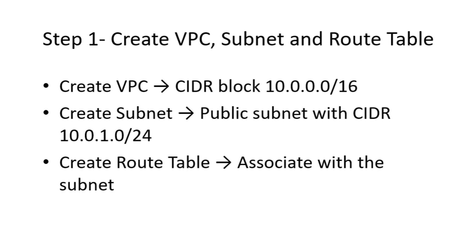Our first step is to create the foundation of the network. We begin by creating a new VPC with the CIDR block 10.0.0.0/16, which gives us a large private address space to work with. Next, inside this VPC, we'll create a public subnet using the CIDR 10.0.1.0/24, which will host our EC2 instance. Finally, we'll create a route table and associate it with the subnet. At this stage, the route table only contains the local route, meaning resources can communicate inside the VPC but not yet with the Internet.